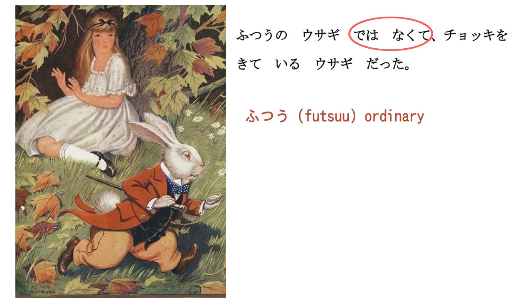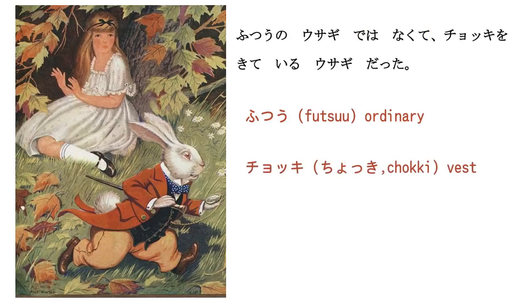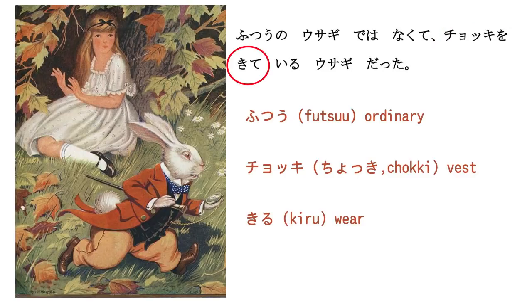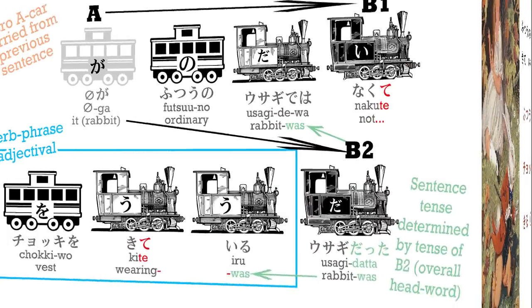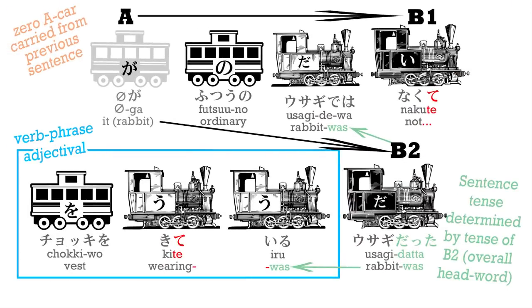Choki wo kite iru usagi datta. Choki means a vest. Kiru means wear, so kite iru means to be wearing, to be in the act of wearing. And datta, of course, is the past tense of the copula. So: it was not an ordinary rabbit – it was a wearing-a-vest rabbit, a rabbit that was wearing a vest.